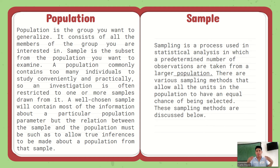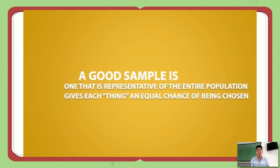Population is the group you want to generalize. Out of the entire population you take a sample — just a portion — so you can know the characteristics or attributes of the population represented in the sample. A good sample is one that is representative of the entire population and gives each member an equal chance of being chosen.